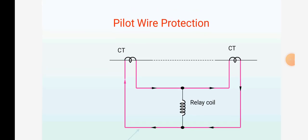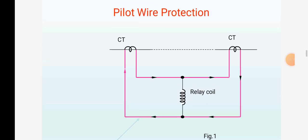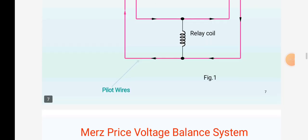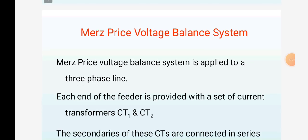This is the diagram for pilot wire protection. The pilot wire protection will be connected in between two current transformers.